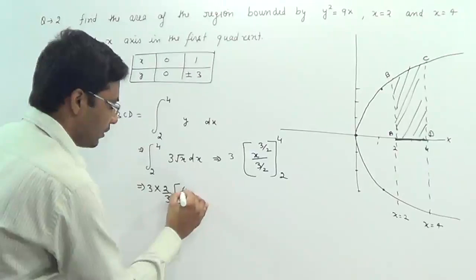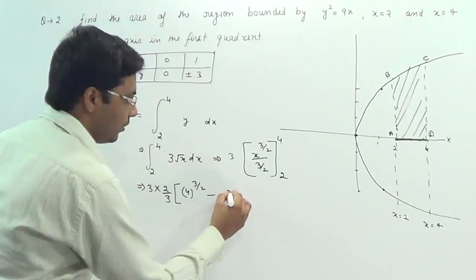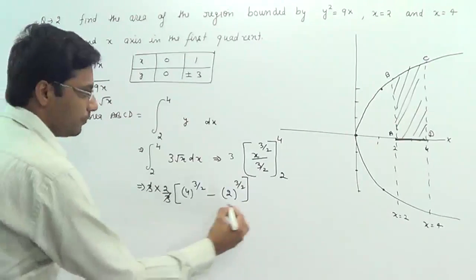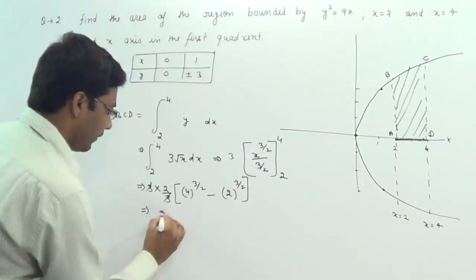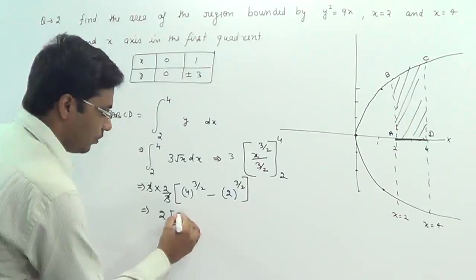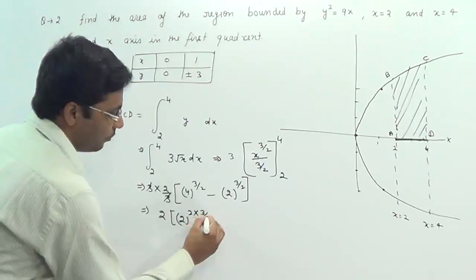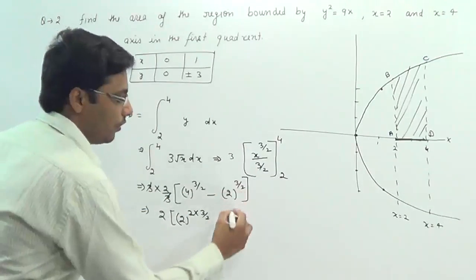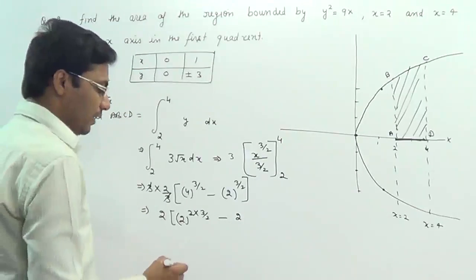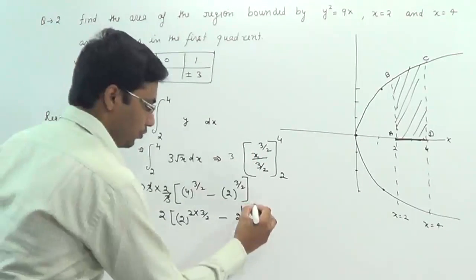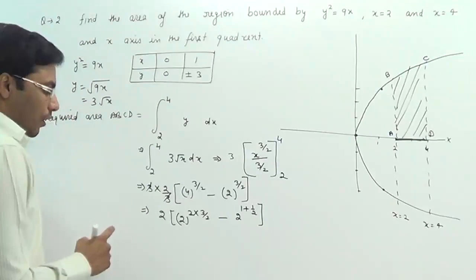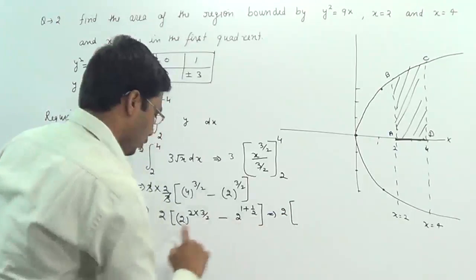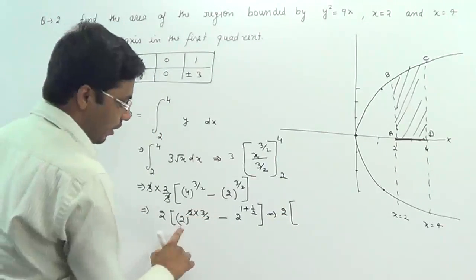From 2 to 4: 4^(3/2) minus 2^(3/2). The 3 will cancel out. After solving, we get 2 times [4^(3/2) - 2^(3/2)]. 4^(3/2) equals 2² raised to 3/2. We can write 3/2 as 1 + 1/2. This gives us 2³, which is 8, minus...